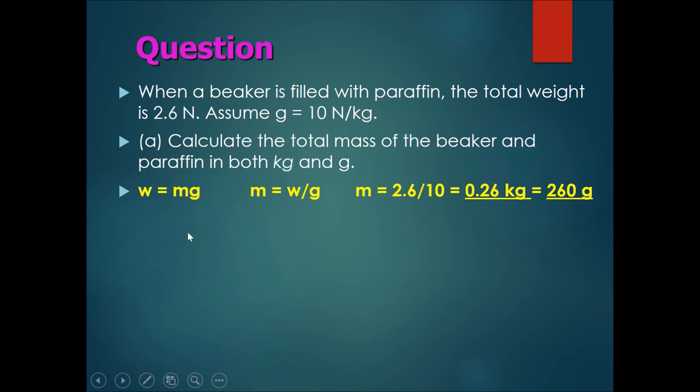W equals mg. Weight equals mass times gravity. Therefore, mass equals weight divided by gravity. The weight of the combined beaker and paraffin was 2.6 newtons divided by the gravity of 10. That should give me 0.26 kg of matter.